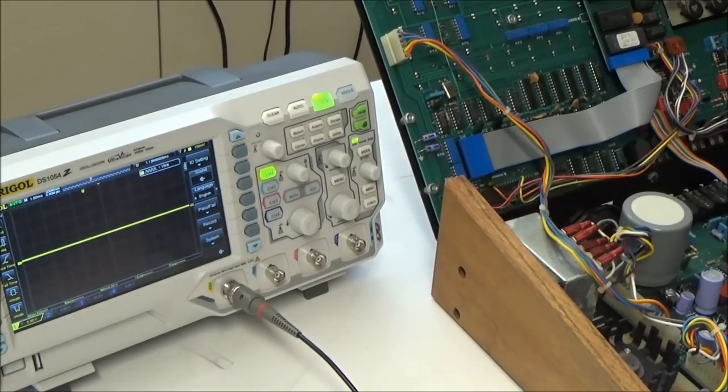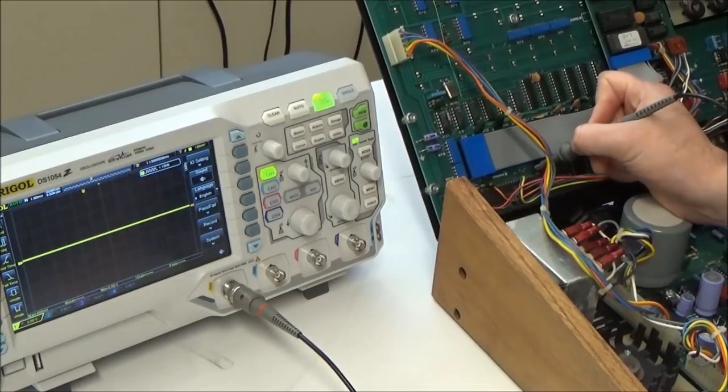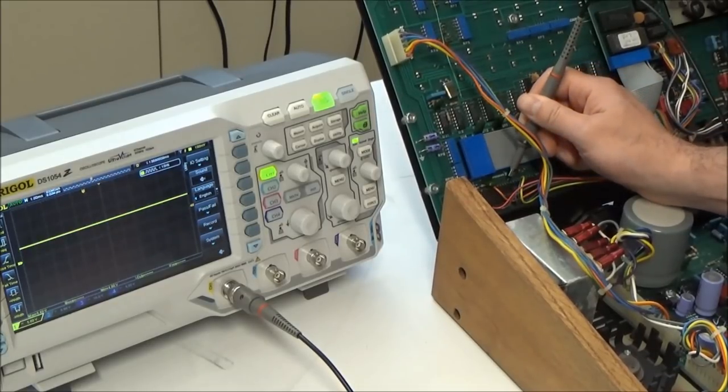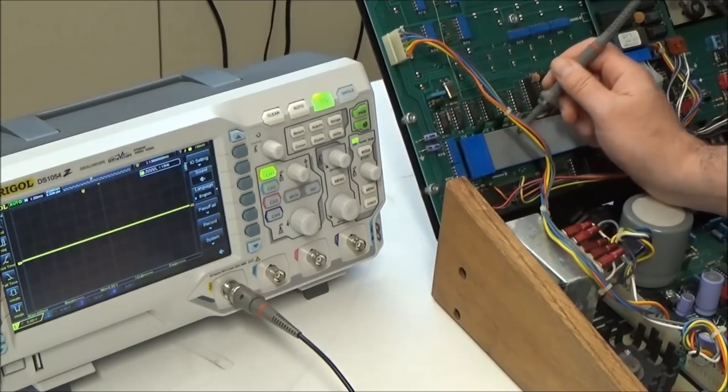For power we're going to check the VCC pin for 5 volts. That's pin 11. And that is 5 volts. I'm using an oscilloscope for this, but you could just as easily use a multimeter. We're also going to verify the ground at pin 29. And that's good.